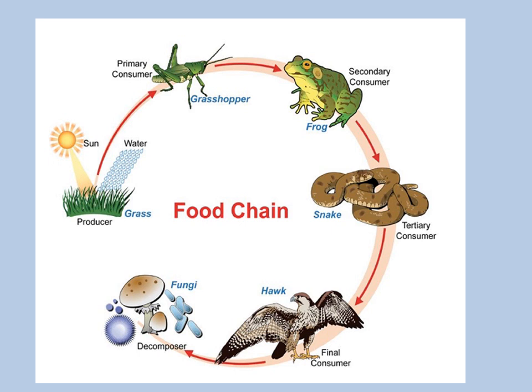This grasshopper is being eaten up by a frog which acts as the secondary consumer. Then this frog is eaten up by a snake which is a tertiary consumer. This snake is eaten up by a hawk which is the final consumer. And this hawk, or its feces, are being decomposed or broken down with the help of decomposers like bacteria, fungi, and microorganisms present in the soil. So, this is a food chain.